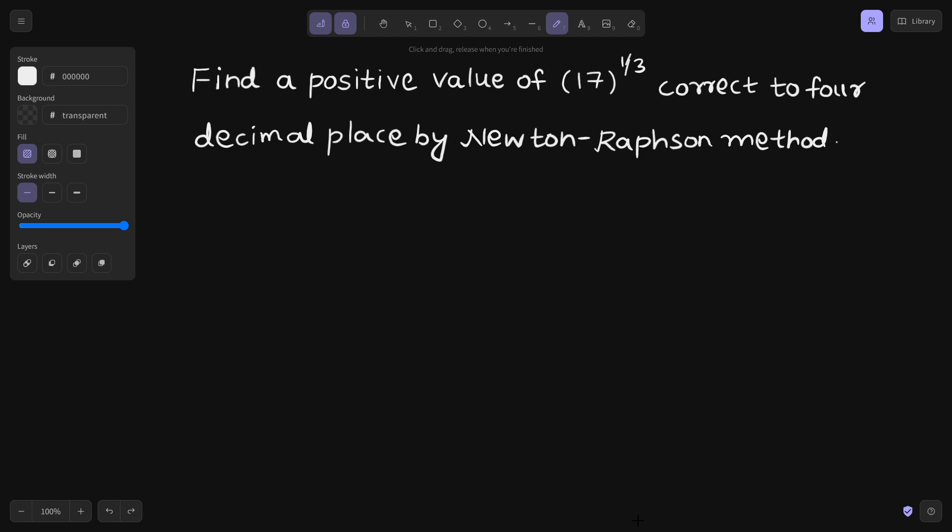Hello everyone, Namaskar, Raj Krishna this side. Let's solve one more problem from Newton-Raphson method. We need to find the positive value of cube root of 17 correct to 4 decimal places with the help of Newton-Raphson method.